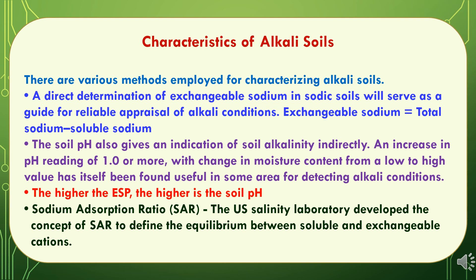There are various methods employed for characterizing alkali soils. First, direct determination of exchangeable sodium serves as a reliable guide: exchangeable sodium equals total sodium minus soluble sodium. Soil pH also gives an indirect indication of soil alkalinity. An increase in pH reading of one or more with change in moisture content from low to high has been found useful for detecting alkali conditions. The higher the exchangeable sodium percentage, the higher the soil pH. The US Salinity Laboratory developed the concept of Sodium Absorption Ratio (SAR) to define the equilibrium between soluble and exchangeable cations.